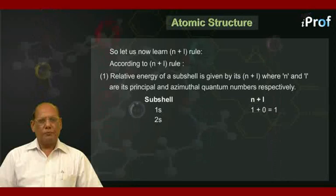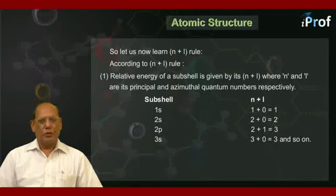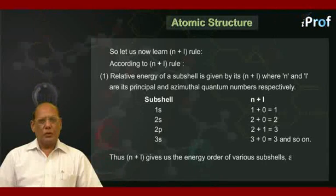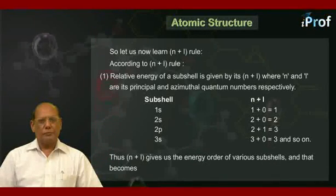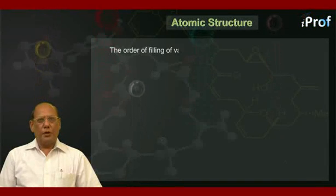For 2s, it is 2 plus 0, that's equal to 2. For 2p, it is 2 plus 1, that's equal to 3. For 3s, it is 3 plus 0, that's equal to 3, and so on. Thus, n plus l gives us the energy order of various subshells, and that becomes the order of filling of various subshells.